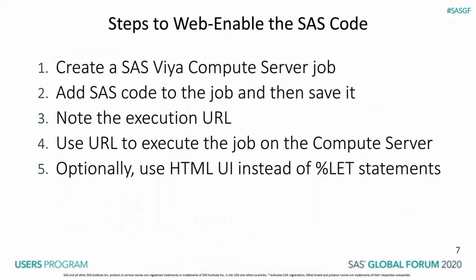Here is an overview of the steps needed to web-enable any SAS code. We use the SAS job execution web application to create a compute server job and then add existing or new SAS code to the job. After saving the job, view the properties to get the URL for the execution, and then use the execution URL in a web or other client to execute the job on the compute server. Our existing code uses percent-let statements to specify hard-coded program input. You can instead use an HTML user interface to collect input from the user at runtime and pass that input to your program as global macro variables, eliminating the need for hard-coding. We won't have time to show the steps to do this, but they are covered in detail in the documentation.